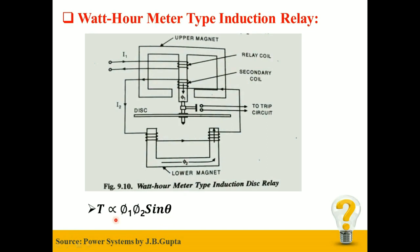During normal condition, this deflecting torque is not sufficient enough to rotate the disc. But during abnormal condition, as current heavily increases, the deflecting torque also increases, which rotates the disc and closes the contact, which sends a trip signal to the circuit breaker and protects the system.